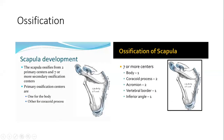The scapula ossifies with the help of two primary centers and seven or more secondary centers. The primary ossification centers appear in the body and coracoid process. Secondary centers appear as follows: one for the body, two for the coracoid process, two for the acromion, one for the vertebral border, and one for the inferior angle.